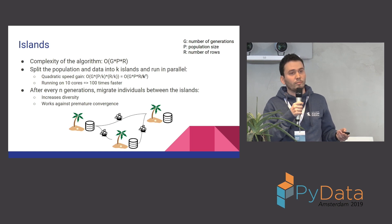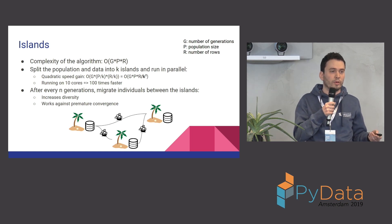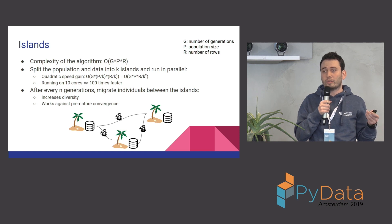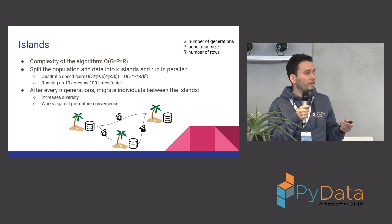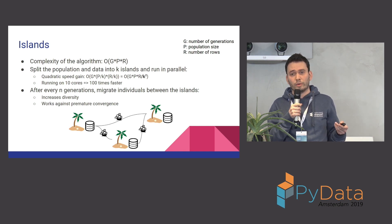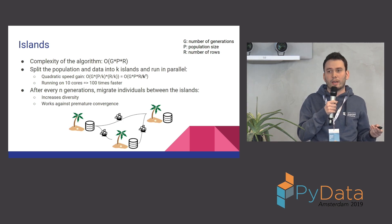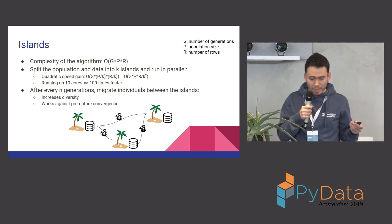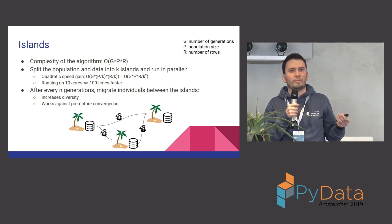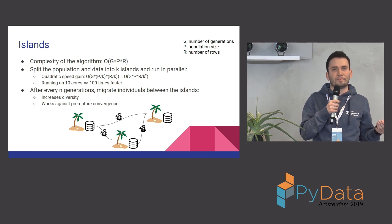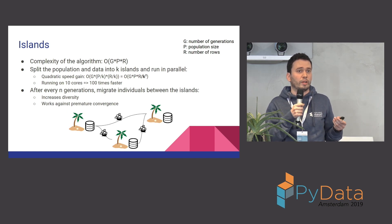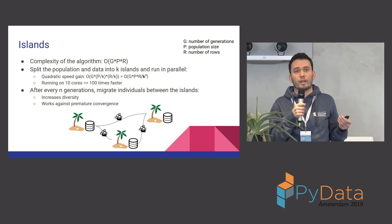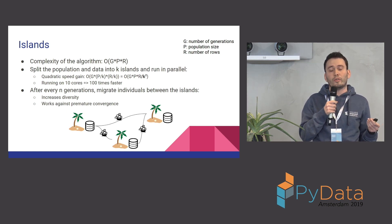We can parallelize it. We can split the data to k islands and we can also split the individuals to k islands. Then we get a quadratic speed improvement because we split both at the same time. You can think of splitting data as subsampling, and the island idea is actually a very generic procedure in genetic algorithms.